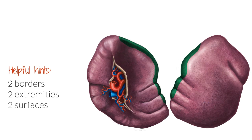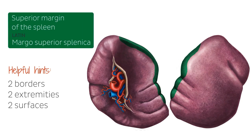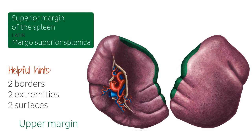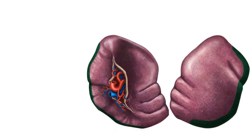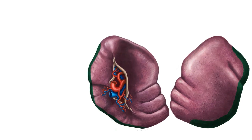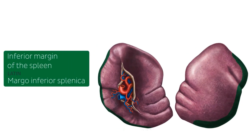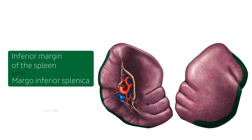Let's begin by looking at the borders of the spleen, starting with the superior border which you see here highlighted on both of these images. The superior border, also known as the upper margin of the spleen, forms the border between the gastric and diaphragmatic surfaces. There is also the inferior margin of the spleen, also known as the lower margin — it is the border between the diaphragmatic and visceral surfaces.